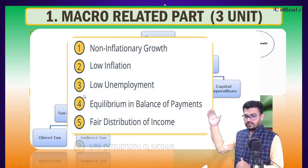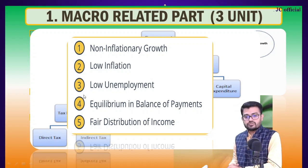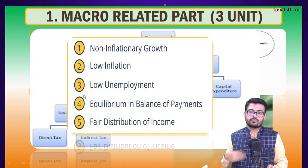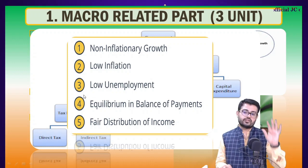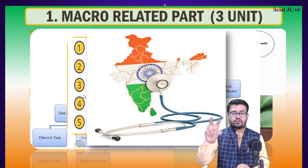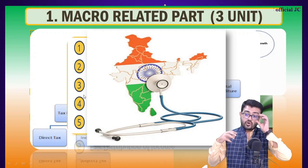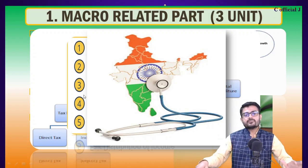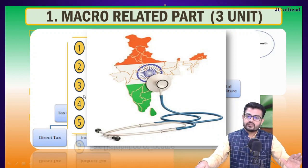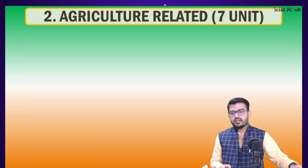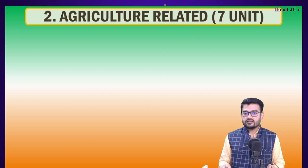The economic topics around non-inflationary growth — inflation, unemployment, balance of payments, forex, income distribution — must be properly understood. This first unit is basically trying to talk about the health and state of the economy overall. You must be well-versed with what is happening in the economy, how things are worsening or improving, from a balanced point of view.